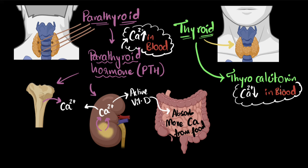So imagine we have high levels of calcium in blood. What's going to happen? PTH is going to reduce because we want to reduce that activity, but not just that — now thyrocalcitonin is released into the bloodstream. And when these receptors bind to these cells, it does the exact opposite of PTH. It asks the cells to reabsorb calcium back into the bone — it puts calcium from the bloodstream back into the bone, reducing calcium in the blood. And it tells the kidneys to not absorb calcium from the urine, which decreases calcium in the blood.